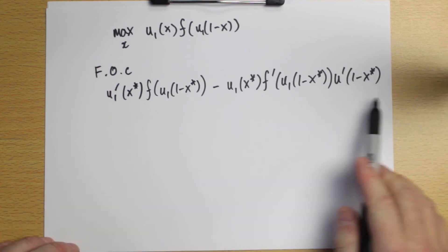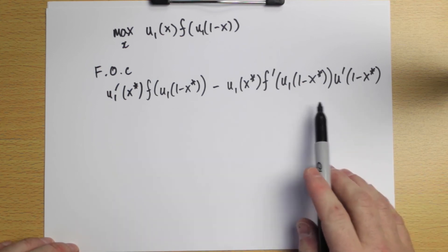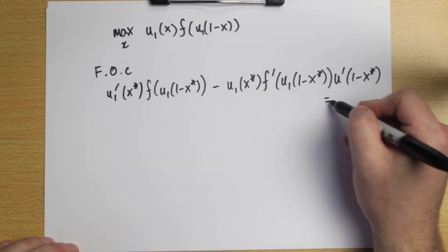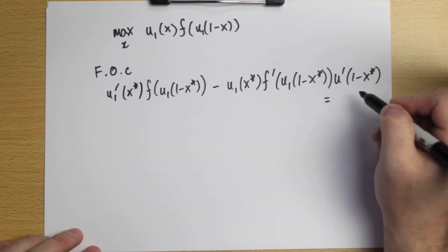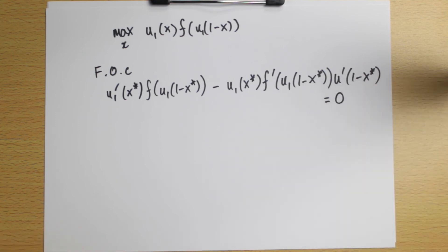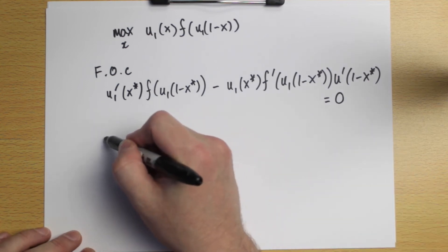So you can go over that and recap what rules of calculus I'm using here. This entire expression evaluated at X star, the alternative player one, or the amount player one receives under the Nash bargaining solution, has to equal zero. So this long expression has to equal zero.